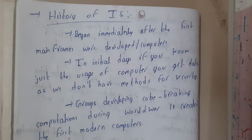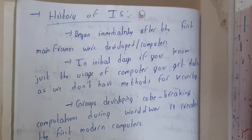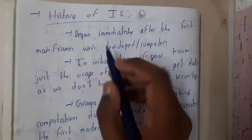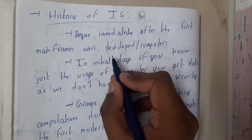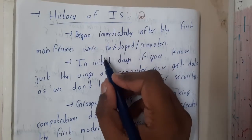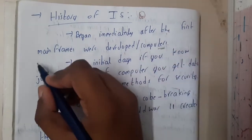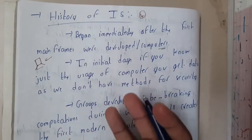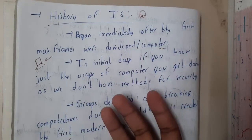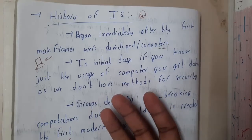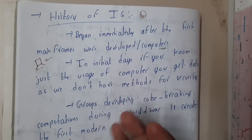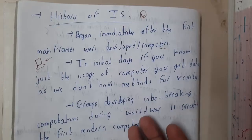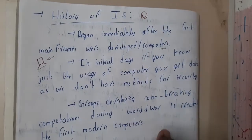Initially, information security began immediately after the first mainframe computers were developed. Basically, whenever the computers were developed, the security of data became required. If you store your files, they should be stored in a secured way. There were some researches being started from as early as the 1960s.